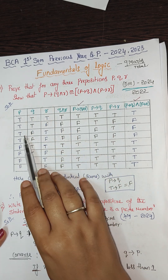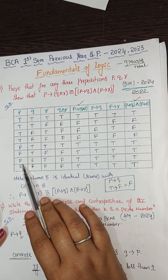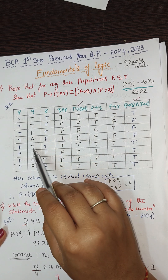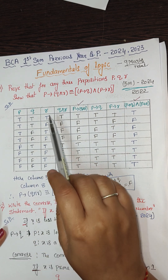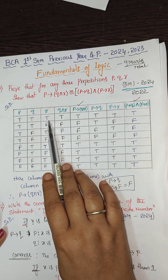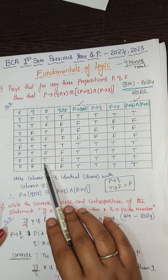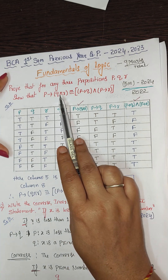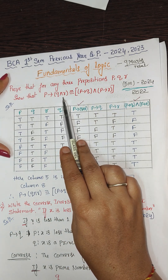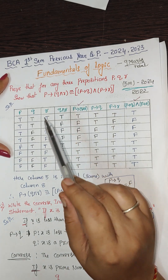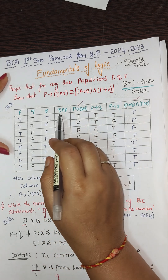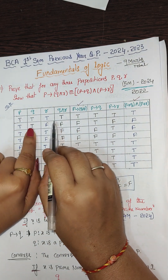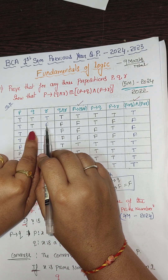Since there are three propositions, we write p: four times T then four times F; q: two times T, two times F, two times T, two times F; r: alternating T, F, T, F, T, F, T, F — eight rows total. Then we find q∧r: conjunction is true only when both propositions are true. T∧T = T, T∧F = F, and so on.